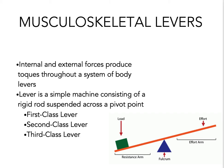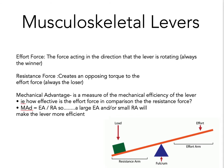Torque is a force multiplied by its moment arm and tends to rotate a body segment around the axis of rotation. Effort force is the force acting in the direction that the lever is rotating and will always be the winner. Resistance force creates an opposing torque to the effort force and will always be the loser. Mechanical advantage is a measure of mechanical efficiency of the lever.